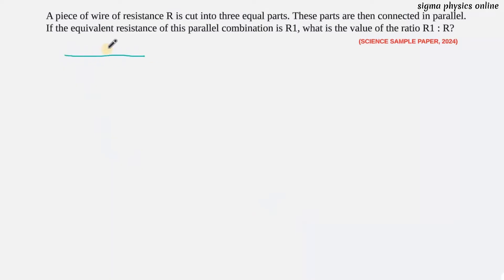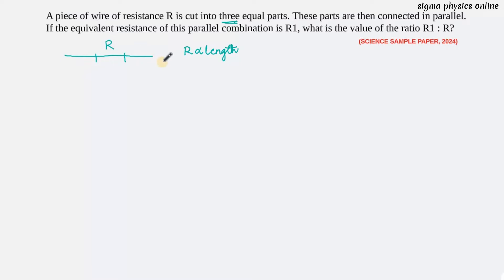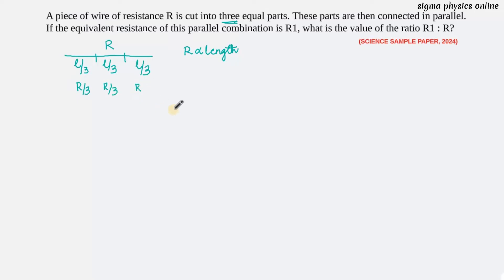In this question, we have a wire whose resistance is R. This wire is cut into three equal parts, and then each part is connected in parallel. We know that resistance is directly proportional to the length of the conductor. If the total length was L and it is cut into three parts, each part becomes L/3. Since resistance is directly proportional to length, if length is reduced to one third, the resistance of each part also reduces to one third. So the resistance of each part becomes R/3, R/3, and R/3.